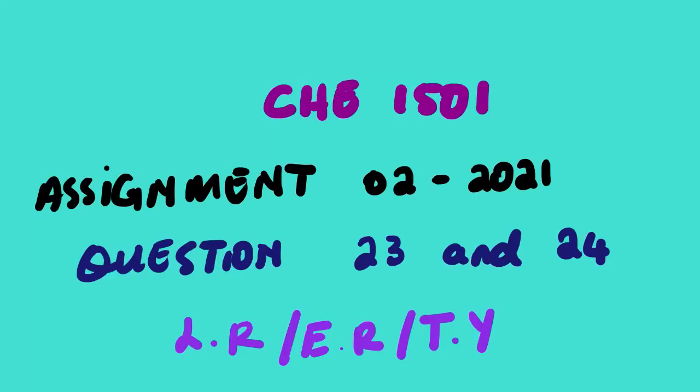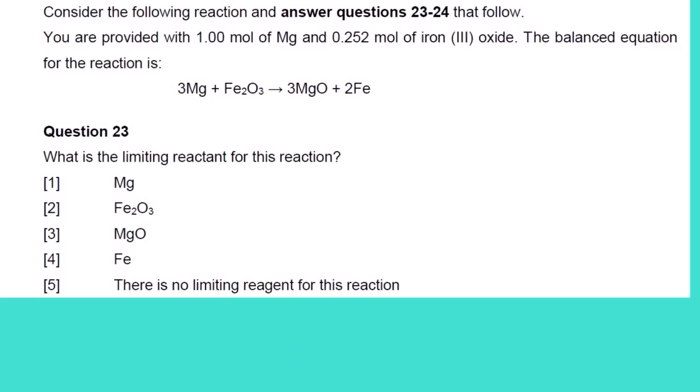Our lesson today will be looking at Chemistry 1501 Assignment Number 2, 2021, questions 23 and 24. These are based on limiting reagent, excess reagent, theoretical yield, and percentage yield. The question is multiple choice. Consider the following reaction: you are provided with 1.00 mole of magnesium and 0.252 mole of iron(III) oxide.